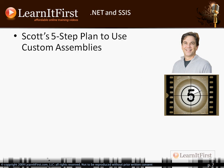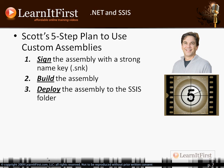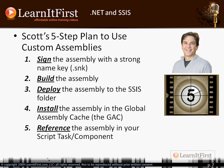Here are the five steps. Number one: sign your assembly — you need a strong name key, which you do right inside Visual Studio or from a Visual Studio command prompt. Number two: build the assembly, which creates the DLL. Number three: deploy the DLL into the SSIS folder. Number four: put it into the GAC — the Global Assembly Cache. Finally, step five: go to your project and reference the assembly inside your script task. That's all five steps.